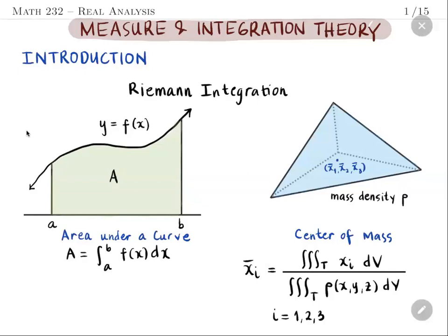For instance, if you want to calculate the area under a curve defined by a function f, bounded by the vertical lines x equals a, x equals b, and the x-axis, then we just need to integrate the function f over the closed interval [a, b].